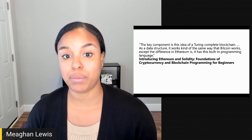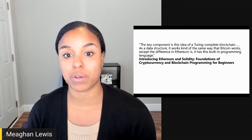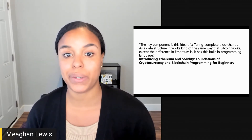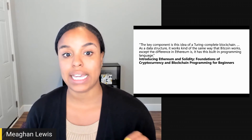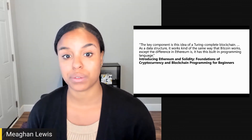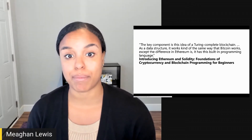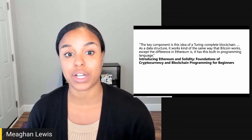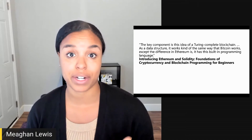The code needs to be compiled to an intermediate bytecode representation, which can be executed on the different platforms. Each node executes the code and verifies the result. When a developer writes smart contracts for Ethereum, they typically write code in Solidity that is compiled and run on the Ethereum Virtual Machine.